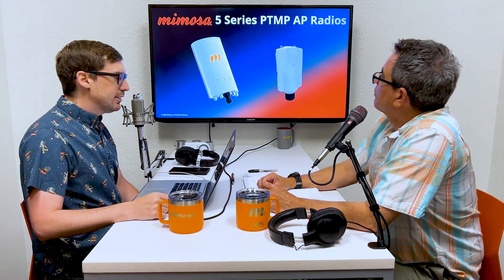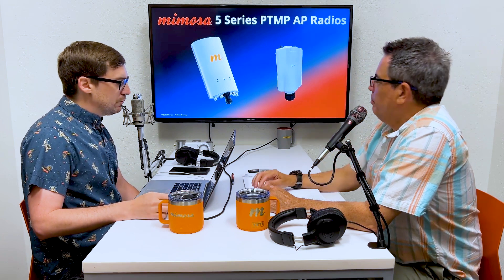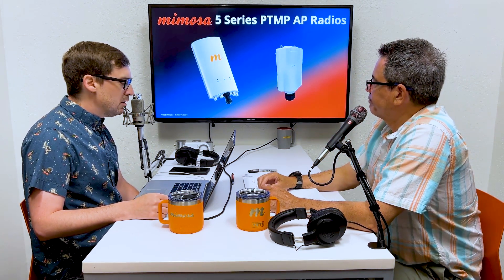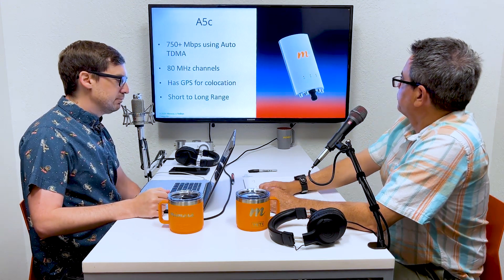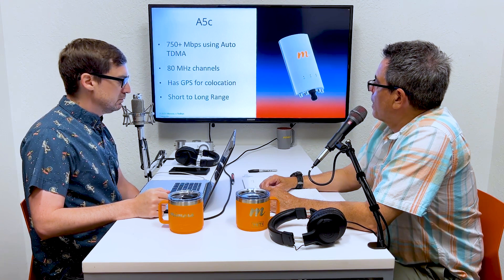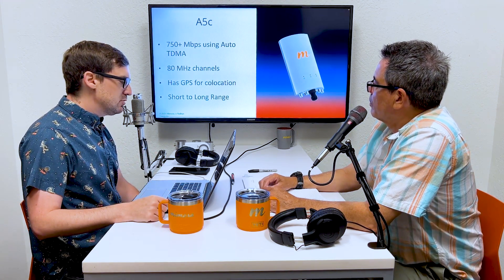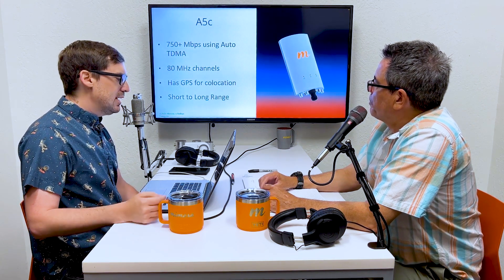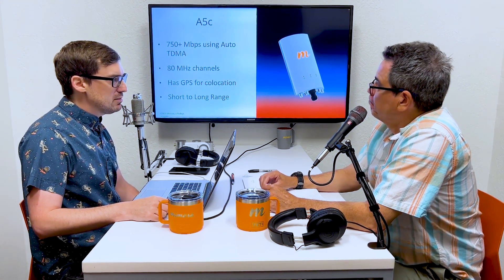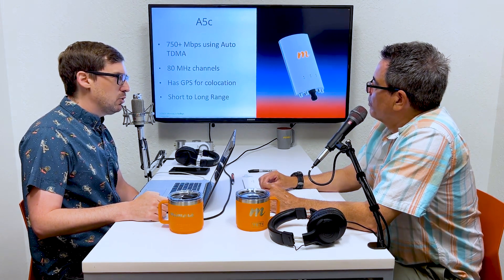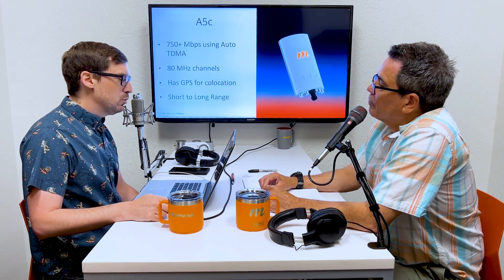Doing point-to-multipoint today would mostly be the A5C or A5X — throughput is much greater now. These are our two 5 Series point-to-multipoint radios. The A5C has been around a long time; the A5X has been around for several years. The A5C, as you can see if you're watching from home, is a four-port radio with 750-plus megabits aggregate using auto TDMA mode. You can do 20, 40, or 80 MHz channels, and it has GPS for co-location and coordination of client radios. It's meant for short to long range deployment.